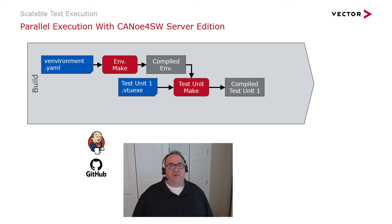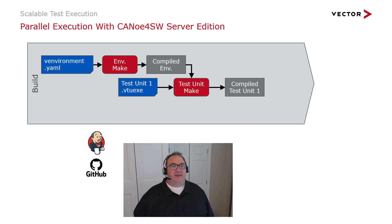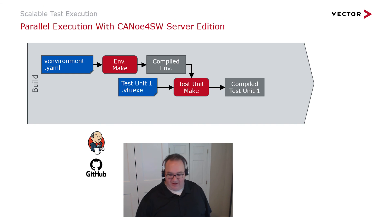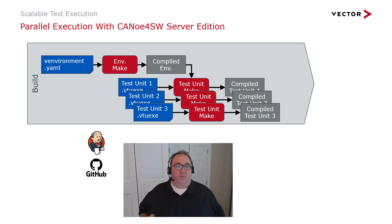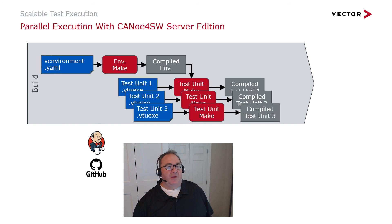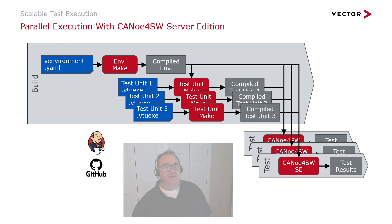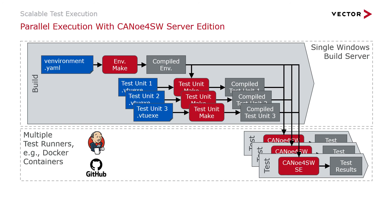CANoe for software server edition enables parallel execution. It has a command line utility that can build and compile all tests in parallel, compiled for Windows or cross-compiled for Linux. Once you have the compiled binaries, you can run those tests in parallel in your CI/CD framework.